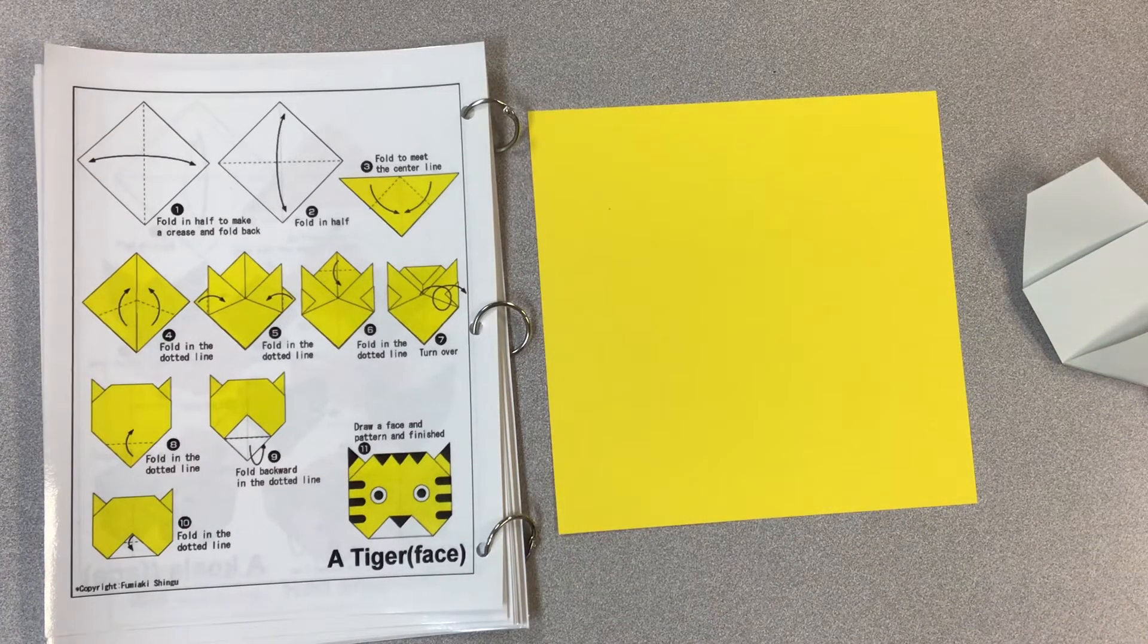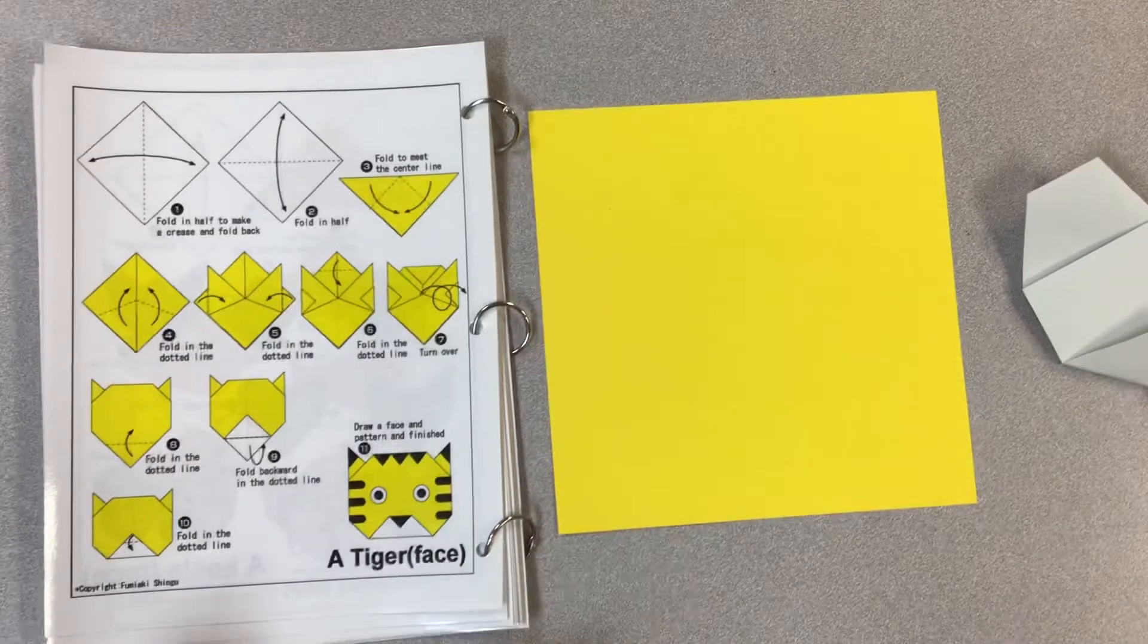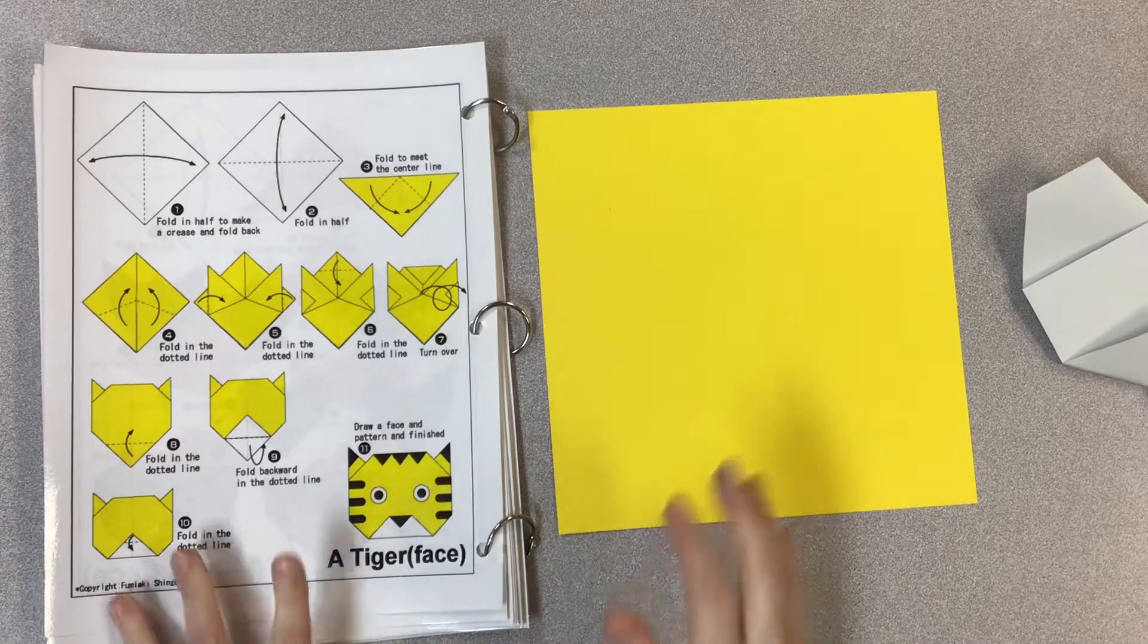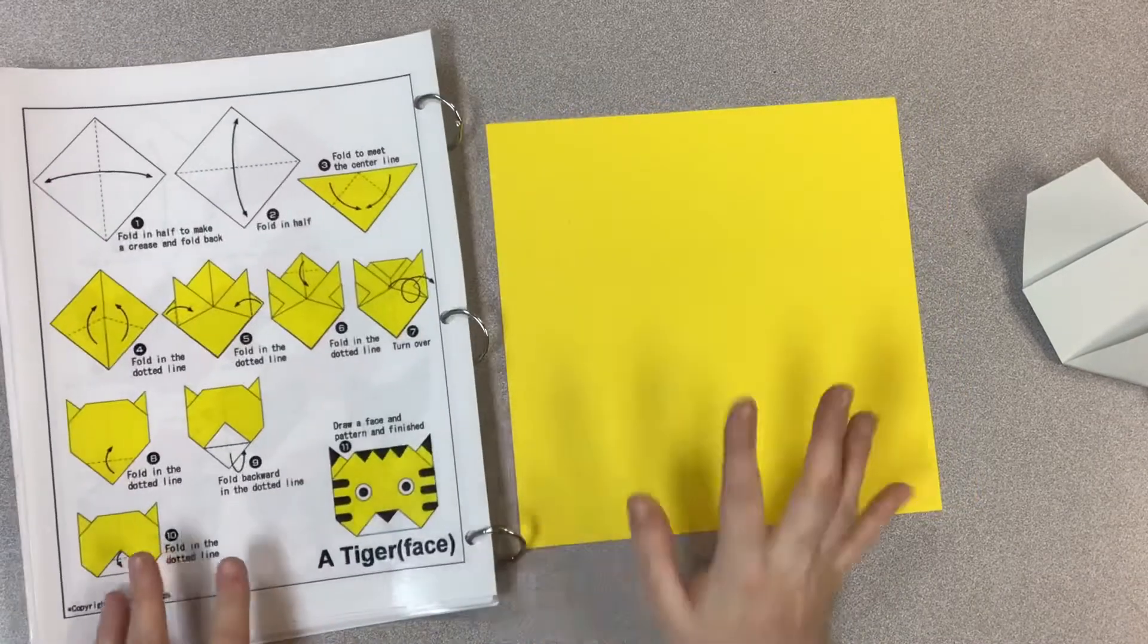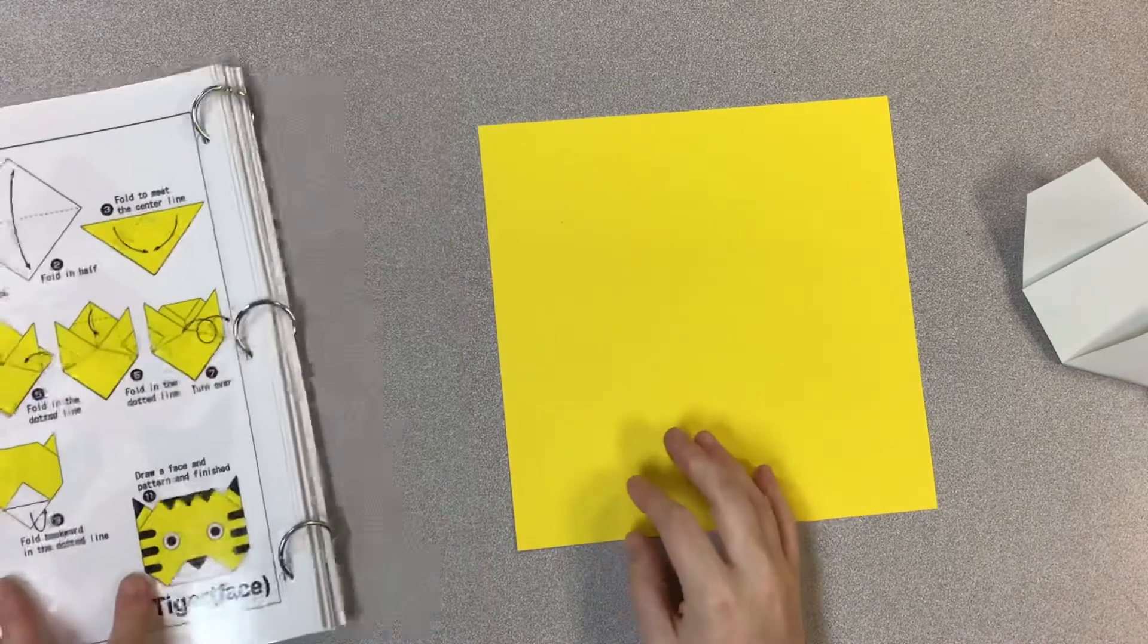Alright, for this project I'm going to be doing a tiger face. Really it could be any type of cat or a cheetah, anything like that. So I got my directions and I got my origami paper, which is square, and I'm ready to get started.